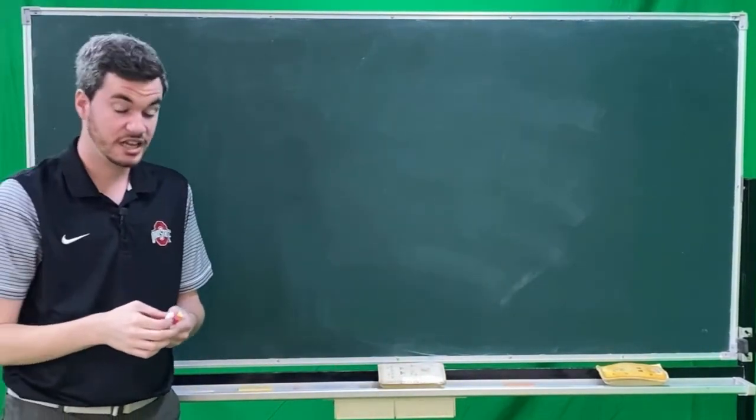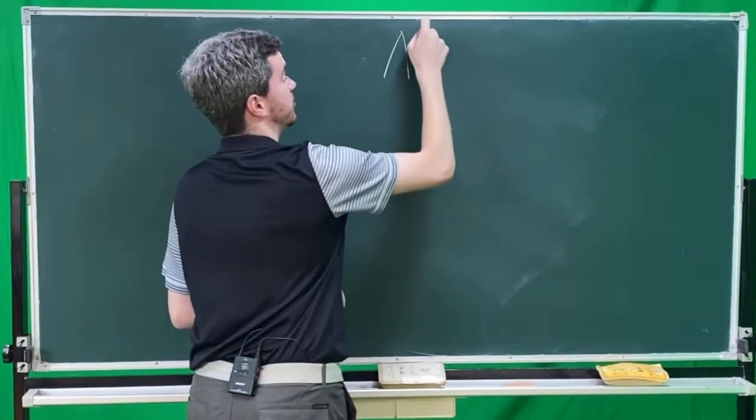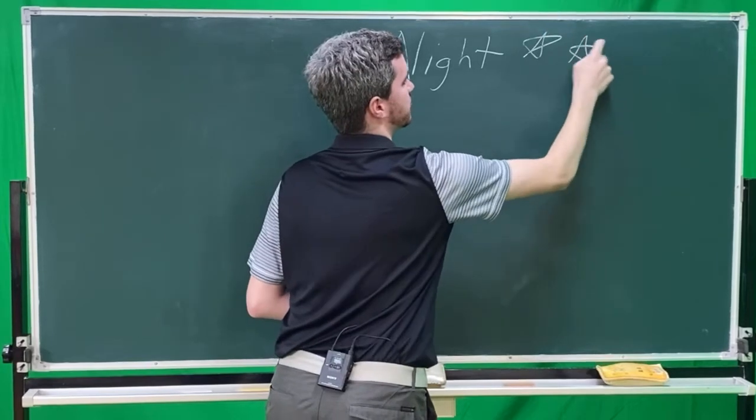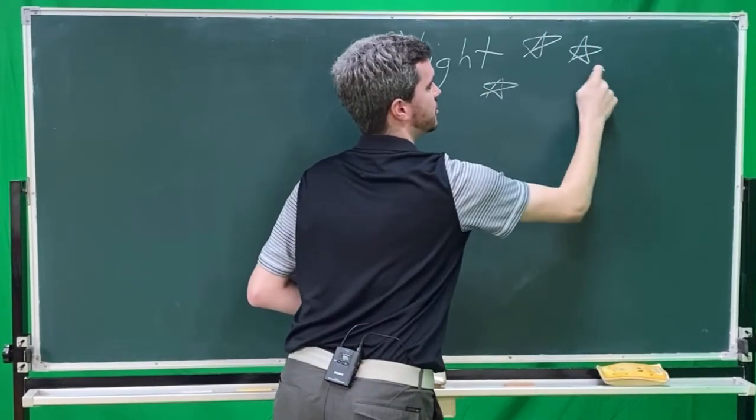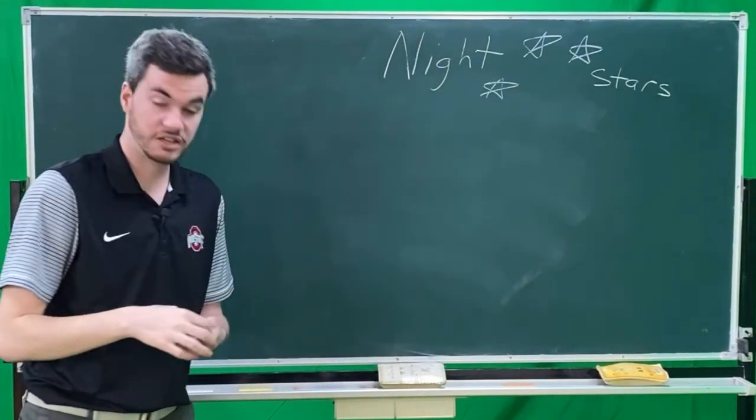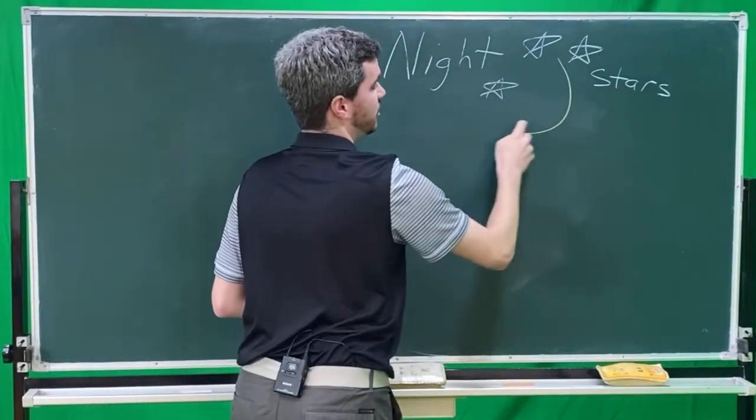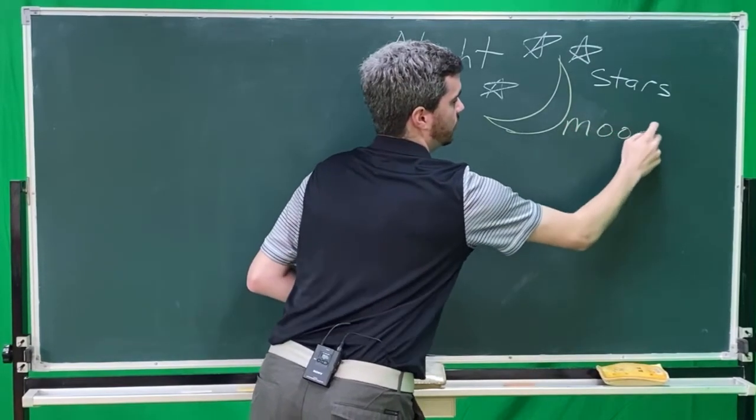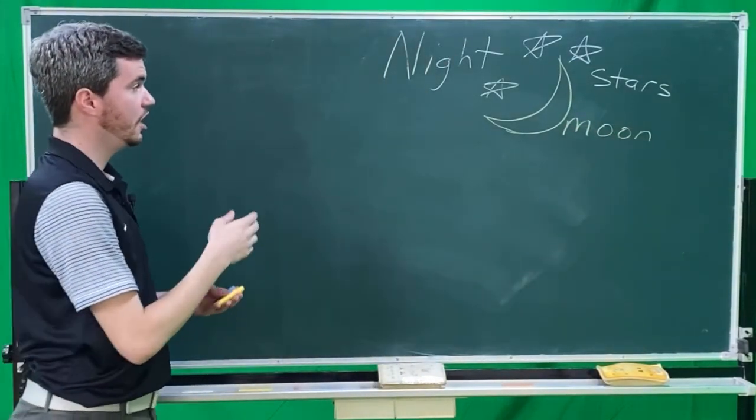Our story today starts at night. At night, the stars come out. These are stars. And next to the stars is the moon. Big moon.